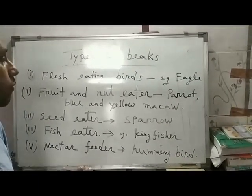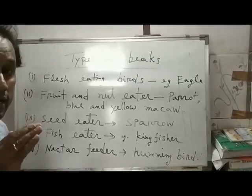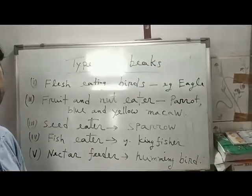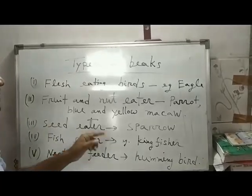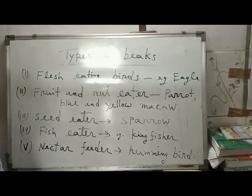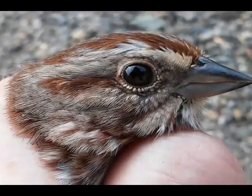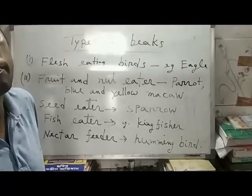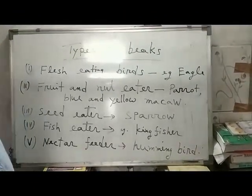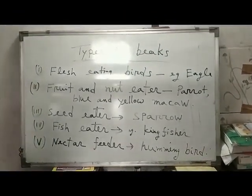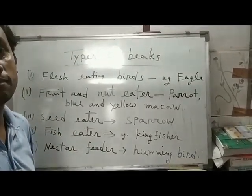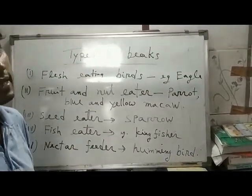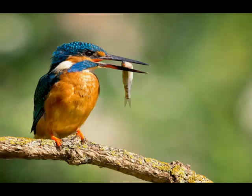For example, the parrot — one very beautiful bird — they have a hardened and curved beak. And for the sparrow, they have a short beak. Like the kingfisher, they have a long, pointed, scissor-like beak.